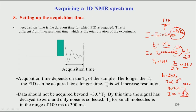Acquisition time has to be optimized based on the T2 value. For typical organic molecules and biomolecules studied in the laboratory, T2 values are in the range of 100 to 300 milliseconds. In NMR spectroscopy one must keep in mind these different time values: pulse width is in the order of microseconds, relaxation delay is in the order of seconds, and acquisition time is in the order of 100 milliseconds. Making a mistake in these time scales will cause the spectrum to come out badly.